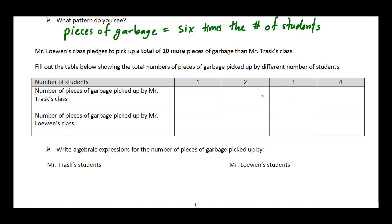So this row here is Mr. Traff's class. If there is one student, that would be six pieces of garbage. Two students would be 12 pieces of garbage. Three students would be 18 pieces, and four students would be 24 pieces. Now Mr. Lowen's class pledged to pick up whatever we pick up and then 10 more pieces on top of that. So if we pick up six pieces, their class picks up 16. If we pick up 12, they pick up 22. If we pick up 18, they'll pick up 28. And if we pick up 24, they're going to pick up 34.